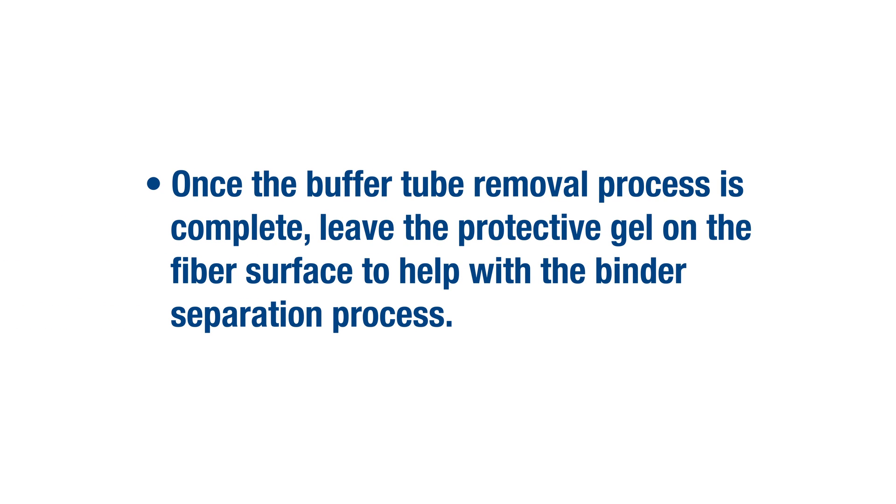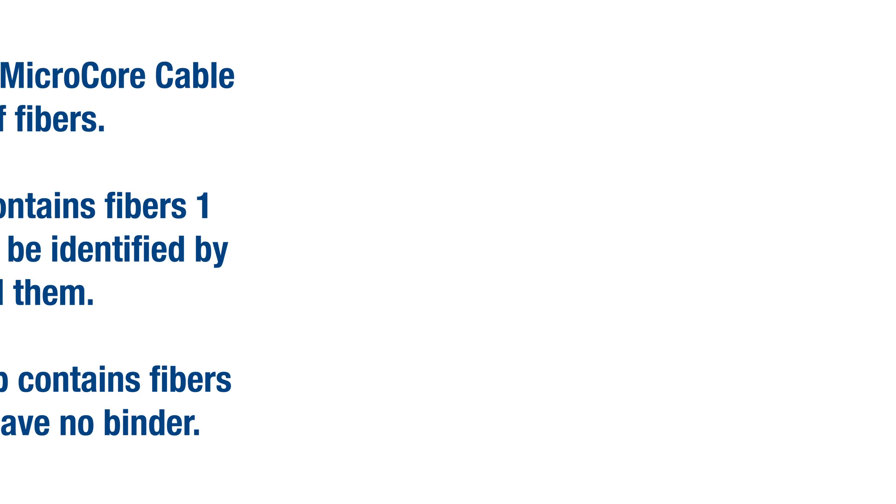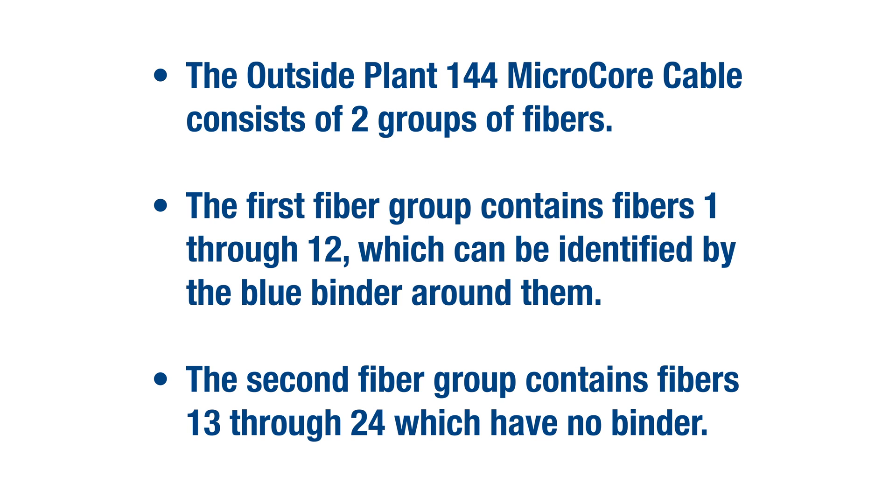Once the buffer tube removal process is complete, leave the protective gel on the fiber surface to help with the binder separation process. The outside plant 144 microcore cable consists of two groups of fibers. The first fiber group contains fibers 1 through 12, which can be identified by the blue binder around them. The second fiber group contains fibers 13 through 24, which have no binder.